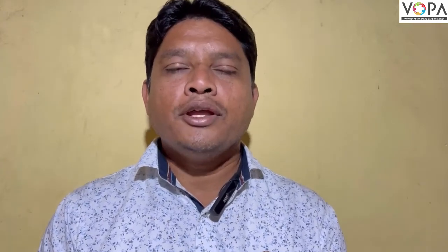A shadow of the moon is cast on the earth, and the Sun cannot be seen from the part in the shadow. This is called a solar eclipse.